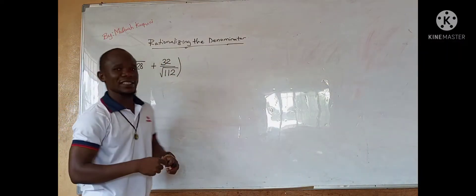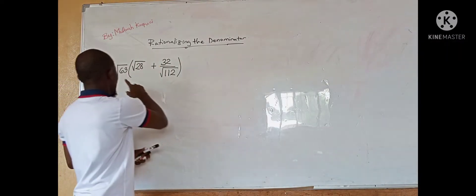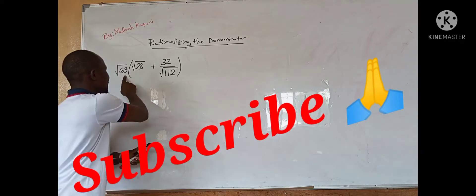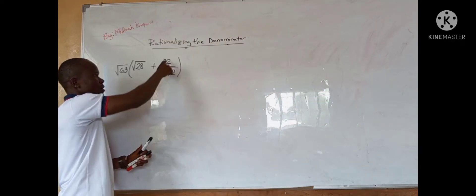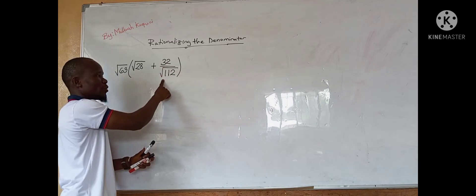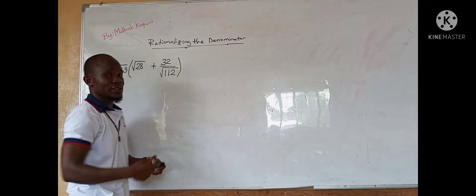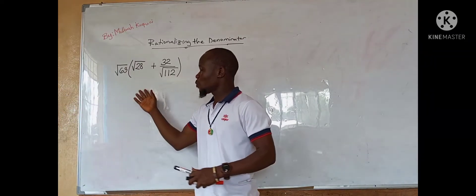We have rationalizing the denominator, and we have the square root of 63 plus the square root of 28 plus 32 over the square root of 104. So we are going to simplify this problem.